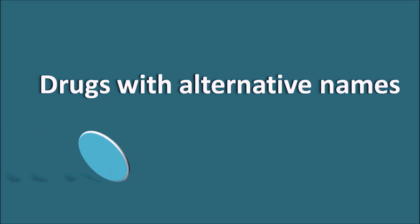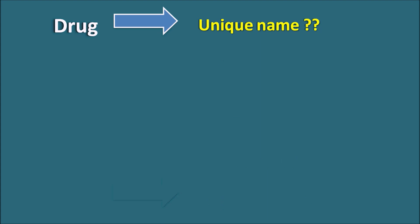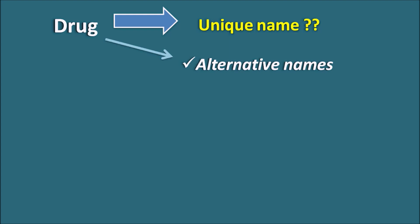Today let us see drugs with alternative names. We have different types of drugs in our medical world. Not all drugs are having unique names, but few of the drugs are also indicated by alternative names. Here the alternative name is not the chemical name — it is another name for the drug which is going to be popular and widely used.